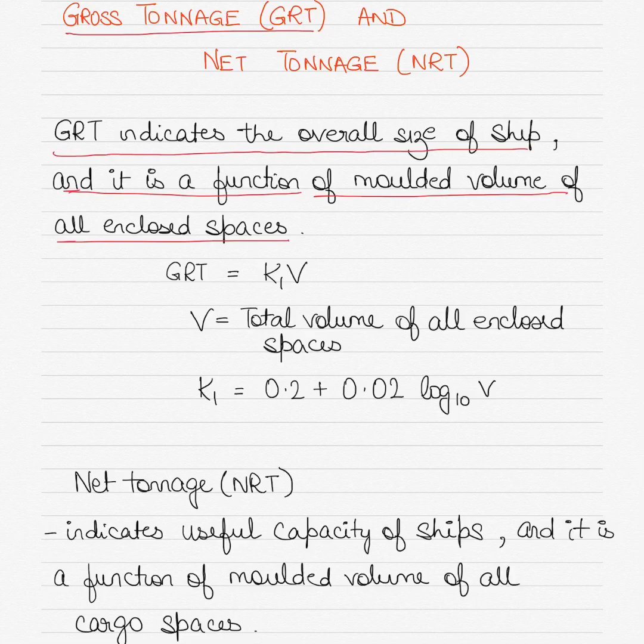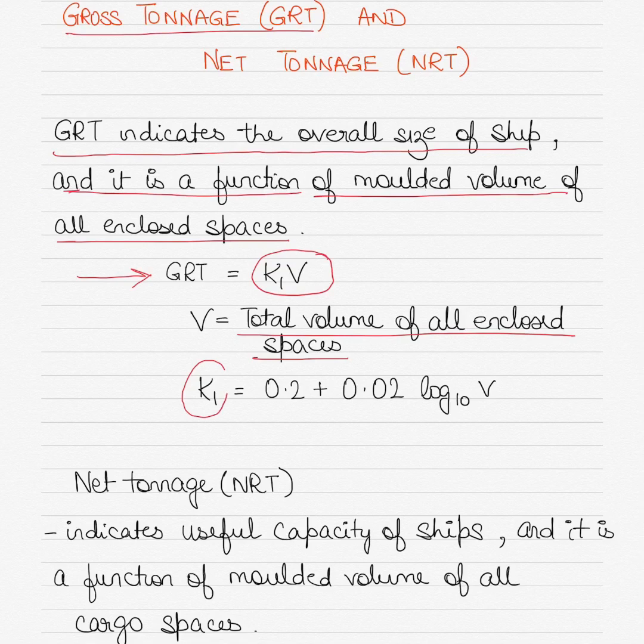Of course, bigger the ship, most likely bigger will be the gross tonnage because it will have more volume of enclosed spaces. GRT is calculated using the formula GRT equals K1·V, where V equals the total volume of all enclosed spaces and K1 is a constant, the value of which is equal to 0.2 plus 0.02 log base 10 of V.